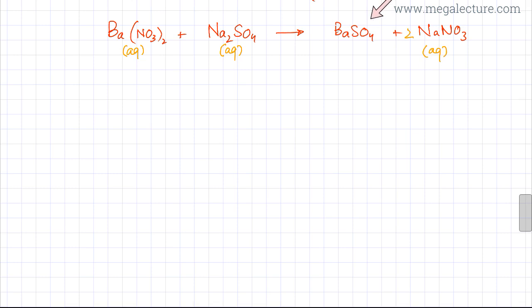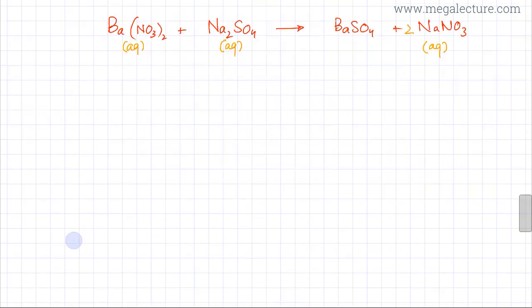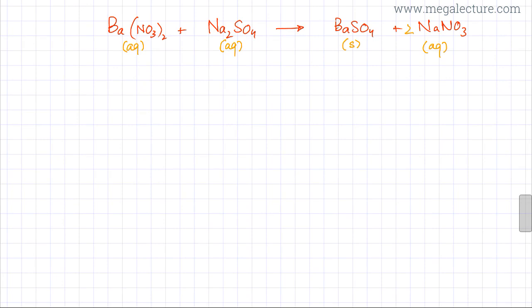Let's open the solubility table and find out whether barium sulfate is soluble or not. Looking at sulfates, the rule states that all sulfate compounds are soluble except barium sulfate, which indicates that barium sulfate is not soluble. So BaSO₄ is going to be a solid.